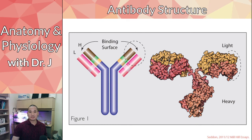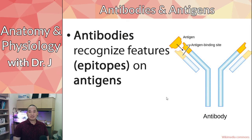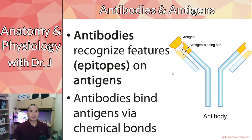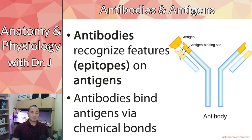Antibodies recognize what we call epitopes on antigens. Epitopes are specific parts of an antigen that bind to the antibody. Notice that it's not the entire antigen surface binding to the antibody — it's just the part that fits into a specific pocket. This part is called the epitope. Binding occurs via chemical bonds such as hydrogen bonds, ionic bonds, or van der Waals forces.